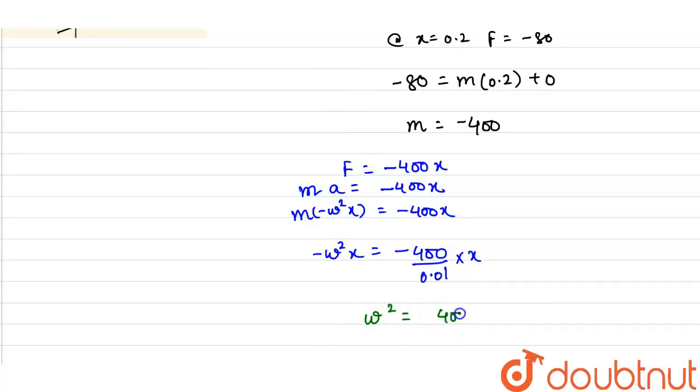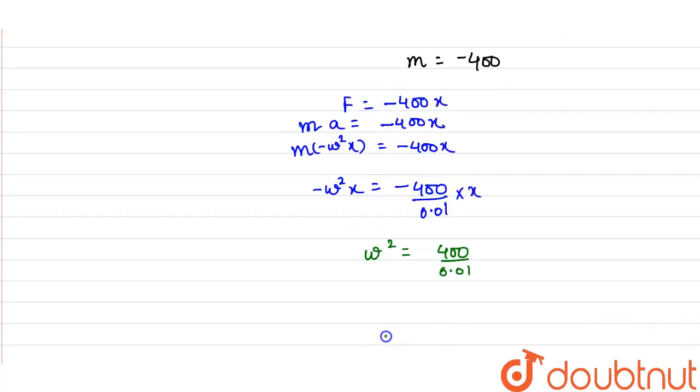Mass is given to us as 0.01 multiplied by x. So from here we get the value of omega square equals 400 upon 0.01.